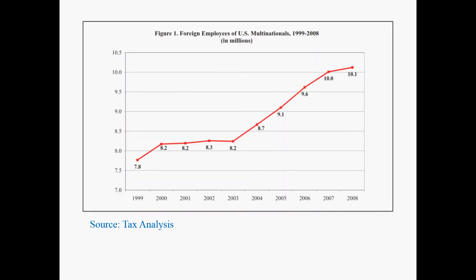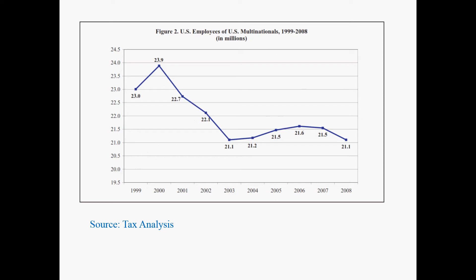This slide shows the foreign employees of US multinational corporations. Many large US companies have overseas facilities, overseas branches, and overseas production sites where they hire foreign workers. With manufacturing migrating to developing countries, American companies increasingly hire more foreign workers. At the same time, because they set up production facilities overseas, the number of workers they hire in the United States becomes less — and that is what you see on this slide.